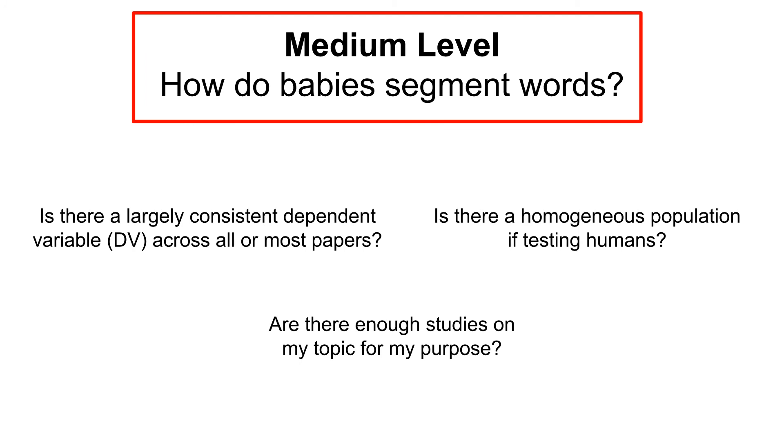And finally, are there enough studies on my topic for my purpose? This is largely a pragmatic choice. You may have found a topic that you're really excited about and that has conflicting results but if the topic is so new you only have five studies and you want to run an analysis with a lot of moderators, it probably isn't enough to warrant a meta-analysis just yet.